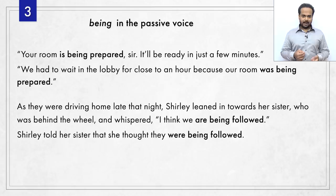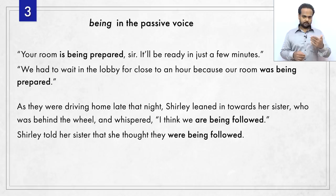So, using being in the passive voice is simply a matter of choosing am, is, are, was, or were, and then putting being after it, followed by the main verb like prepare or follow in the past participle or B3 form. We'll see more examples in the exercise later.